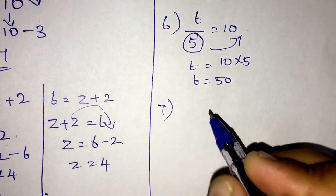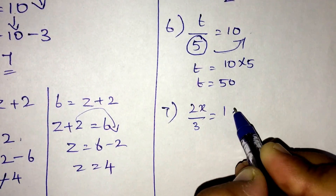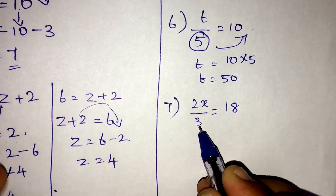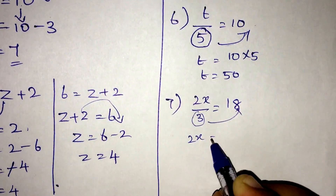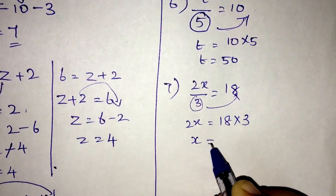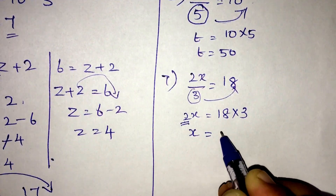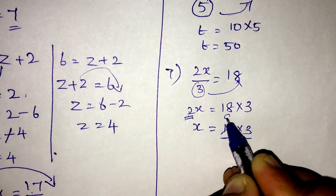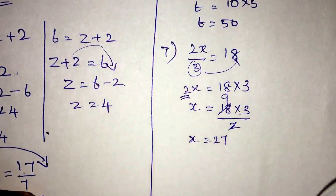Sum number 7: 2x by 3 is equal to 18. Moving the 3 to the other side gives 2x equals 18 into 3. Then the 2 in the numerator goes to the denominator on the other side, giving x equals 18 into 3 divided by 2, so the value of x is 27.